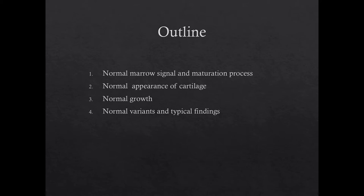These are the topics for today: the normal appearance of pediatric bone marrow, including examples in different aged patients, as well as a discussion of the normal maturation from hematopoietic marrow to the fatty marrow pattern seen in adults; the normal appearance of pediatric cartilage, specifically the unossified epiphyseal cartilage and the cartilage in the physis or growth plate. We will go through a discussion of the MR appearance of normal growth in a long bone through the process of endochondral ossification. Finally, we will include some normal structures and commonly seen variants in the pediatric skeleton on MRI and how to avoid misinterpreting these as disease.